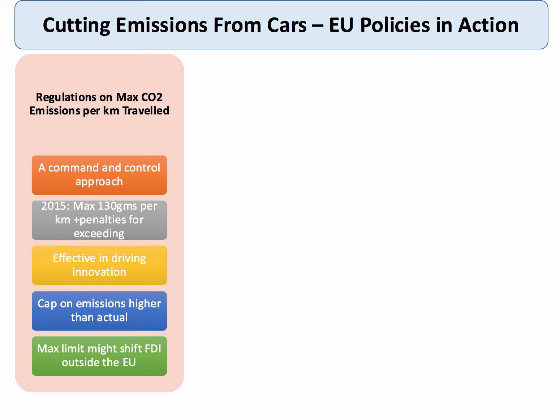In 2015 there was a maximum of 130 grams per kilometre travelled, with quite significant penalties for car firms that exceeded the emissions target. It has been fairly effective in driving down innovation — the cap on emissions is higher than the actual for most cars, so lots of companies are staying within the target. We know there's been some controversy with companies like Volkswagen using software to falsify their emissions, which is quite a big issue for evaluation. One danger with regulations is it might shift some foreign investment outside of the EU, which is a trade-off the EU has to consider. But regulations do seem to have been fairly effective in bringing down emissions per kilometre travelled.